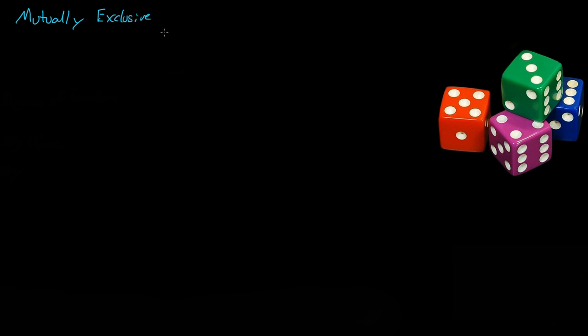This is a quick video over mutually exclusive events. Basically, what that means is if you have two events and they are mutually exclusive, that means they cannot occur at the same time. So if we have Event 1 equal to getting a 1 and Event 2 is getting a 4, then Event 1 and Event 2 are mutually exclusive.